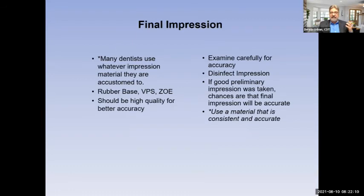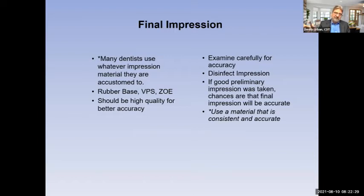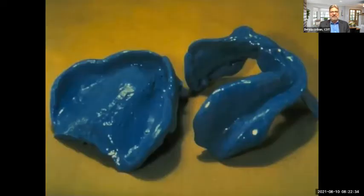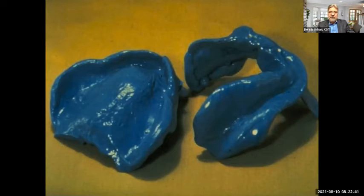For the final impression, I like to use a high-quality VPS material for better accuracy. A good preliminary impression means the final impression is likely to be accurate too. Use a good impression material — something consistent, stable, and accurate. This is a nice, accurate final impression where we captured all the anatomical landmarks and borders. This is going to be a good case.